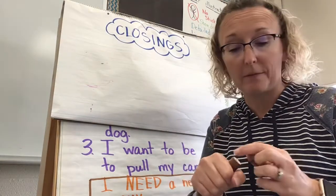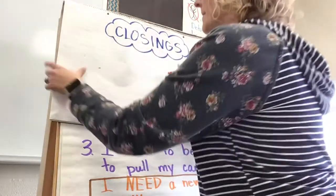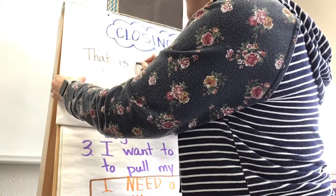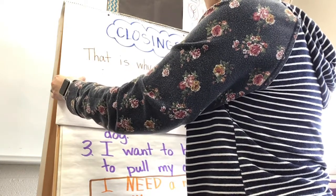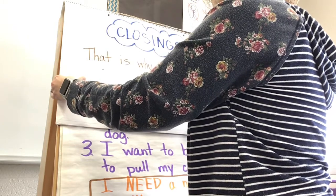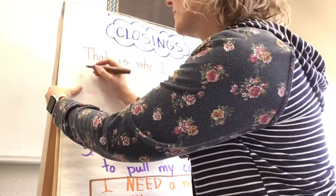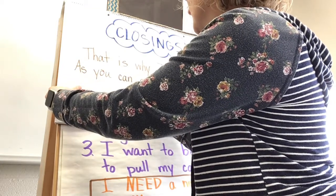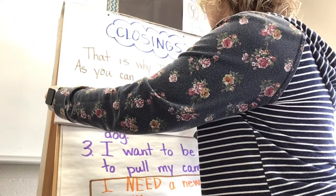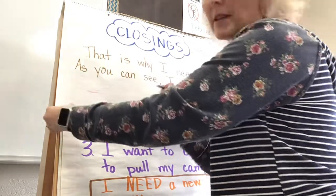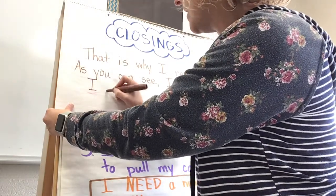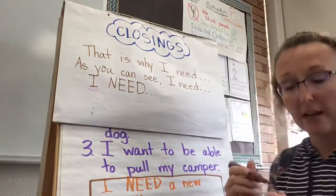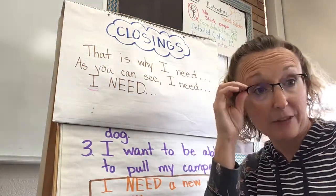So we could say — here's one example — 'That is why I need...' and then you fill in whatever it is you need. Or you could write 'As you can see, I need...' and whatever you need. Or you could do like Mrs. Kimmel did and just write 'I need...' and whatever you feel like it is. So let's practice trying these different closings out with my topic. Remember, my topic is a new SUV.